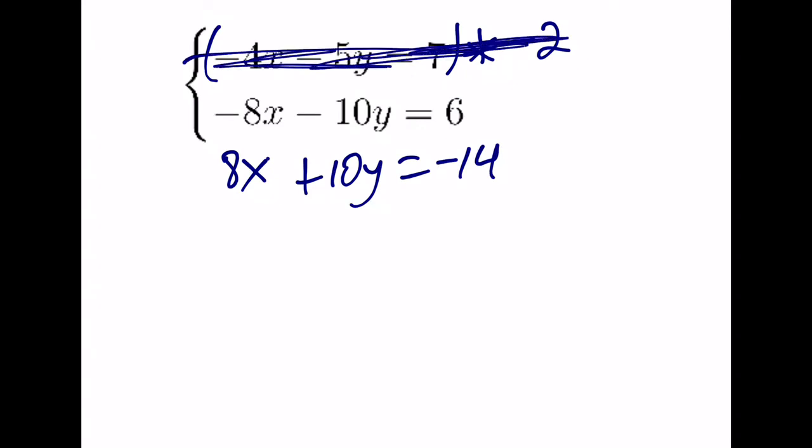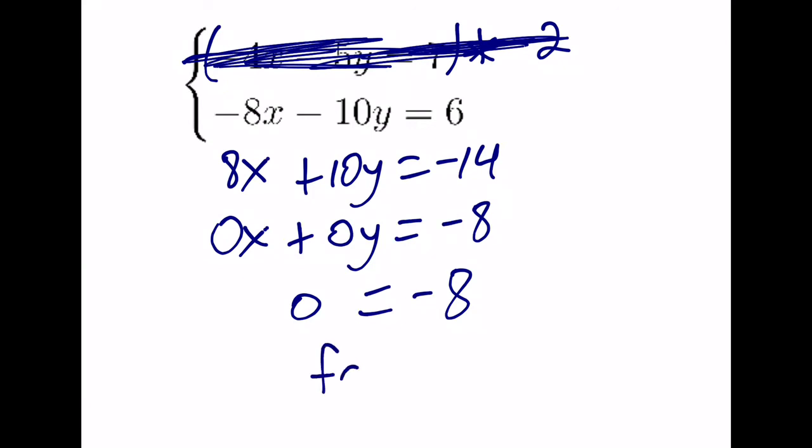So I'm going to cross off that top equation because I have now modified it. And when I add straight down, I get 0x plus 0y is equal to negative 8. Everything in the left here becomes 0. And if 0 is equal to negative 8, is that a true statement? No, that is false. And when we encounter a false statement, there are no possible solutions for this system of equations.